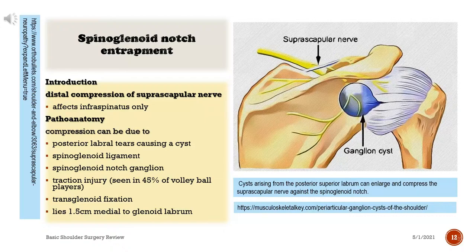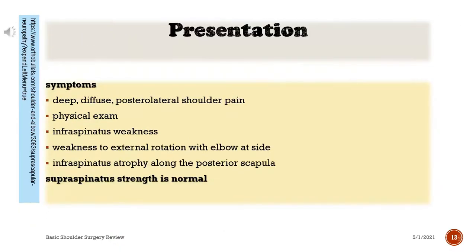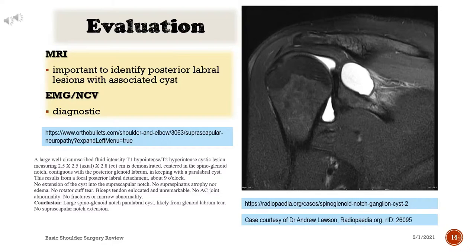Presentation: symptoms include deep diffuse posterolateral shoulder pain. On physical exam, there is infraspinatus weakness — specifically weakness to external rotation with the elbow at the side — and infraspinatus atrophy along the posterior scapula. Supraspinatus strength is normal.